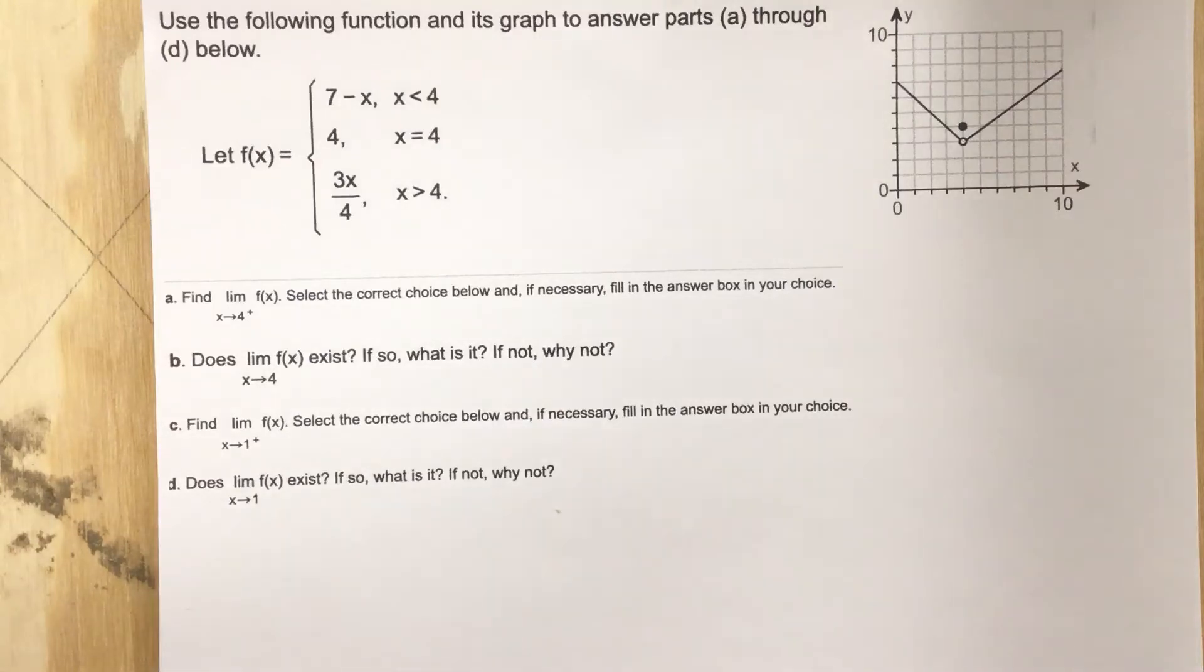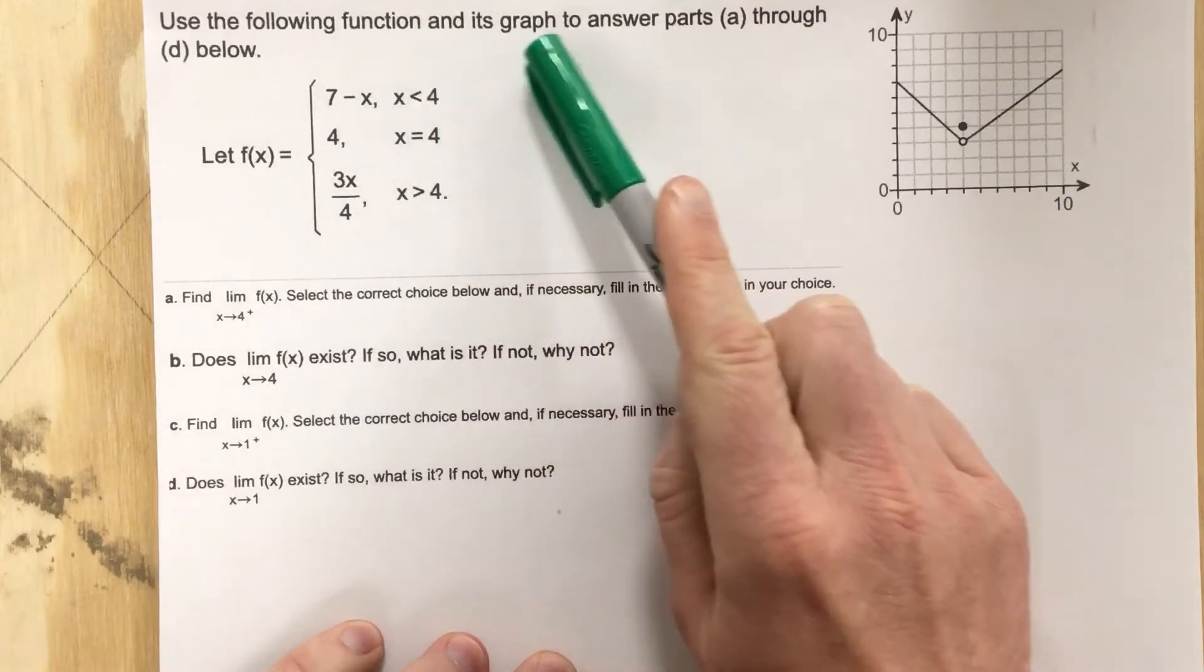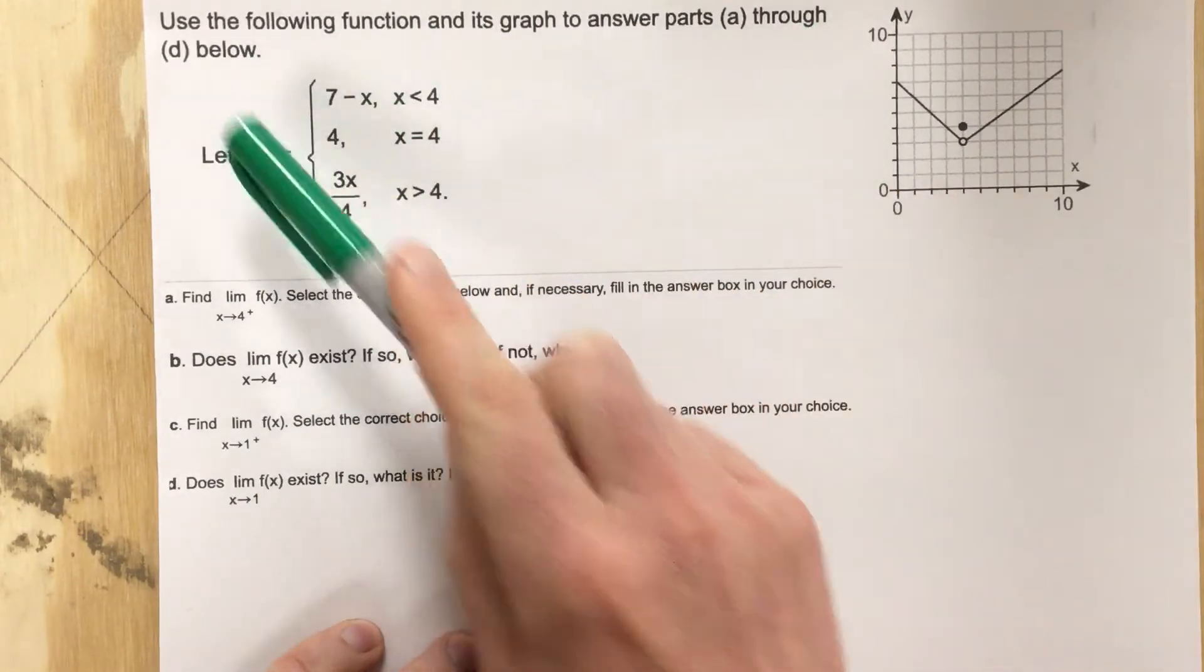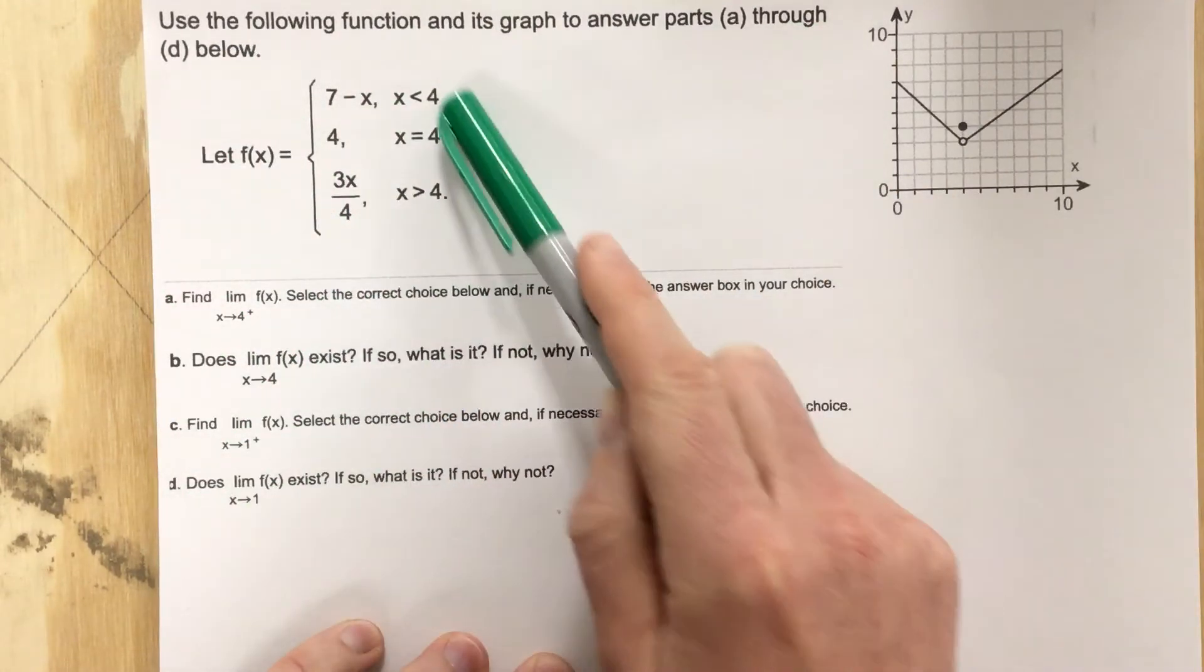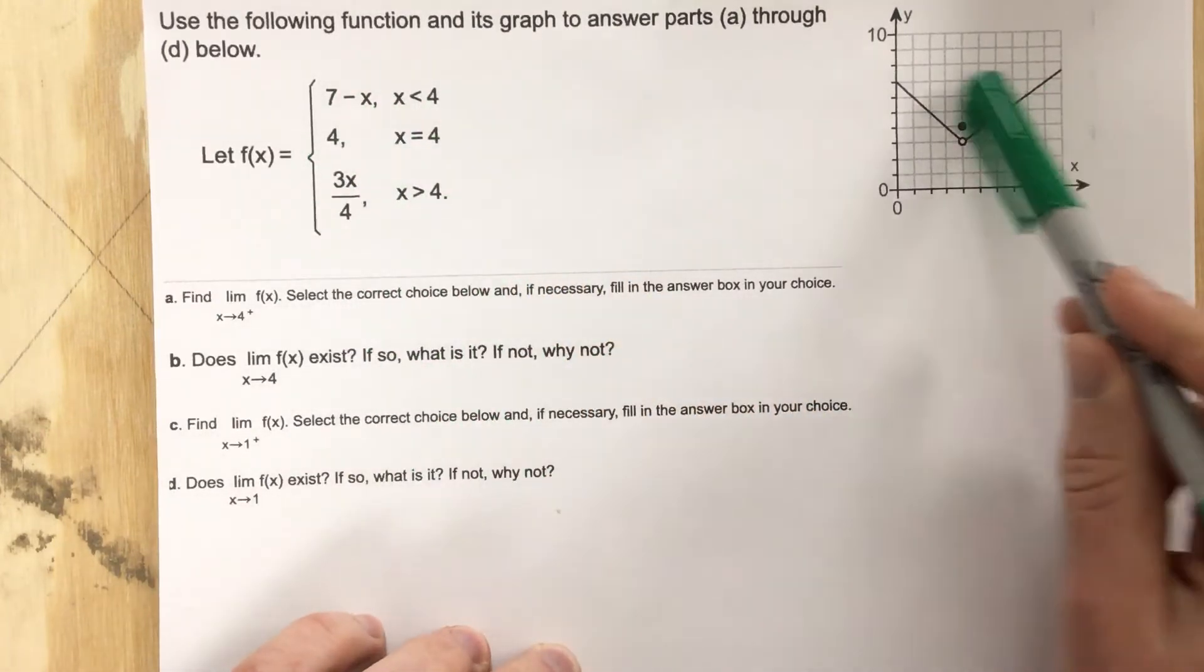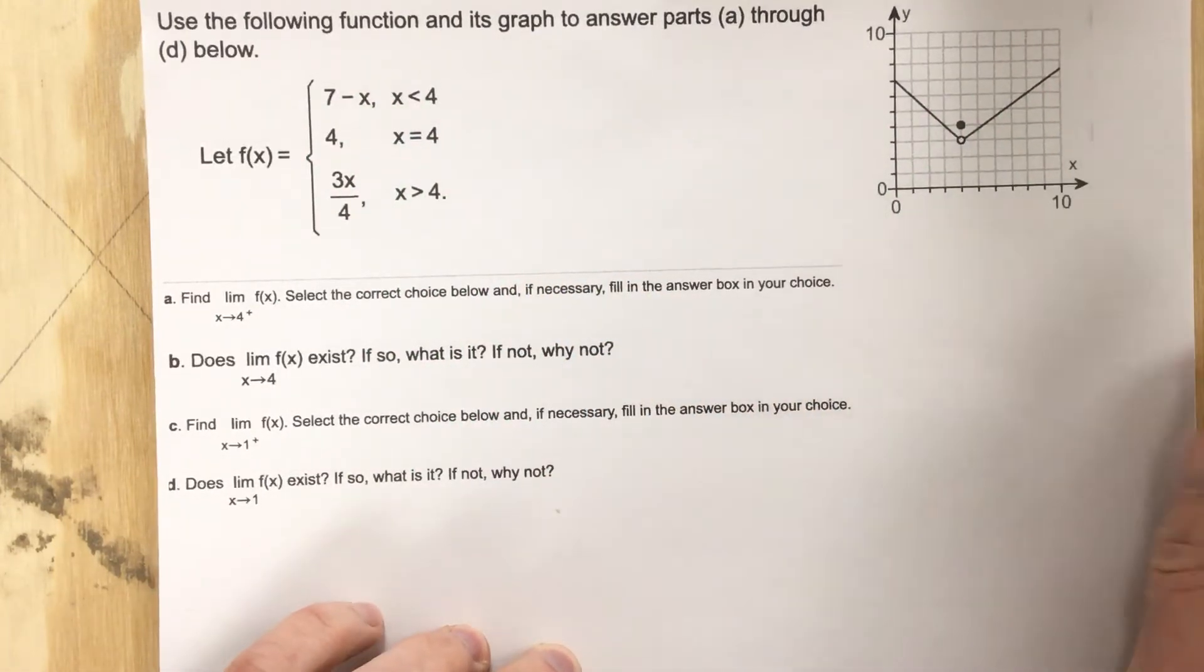This is problem number 3 from section 2.4. This problem says use the following function and its graph to answer parts a through d. So we have parts a through d for this piecewise function here. The piecewise function is graphed up to the right, which definitely helps for this problem.